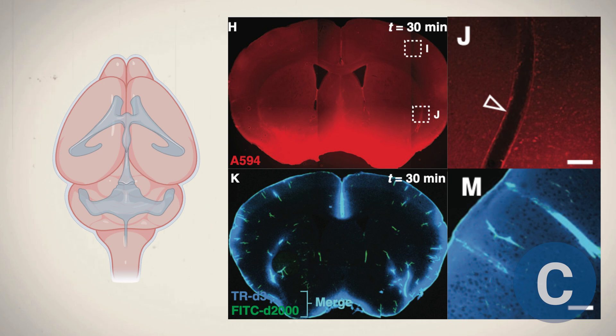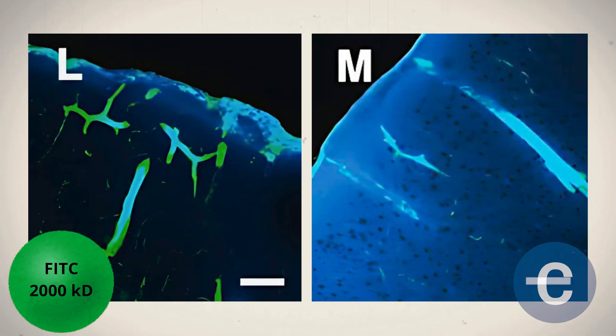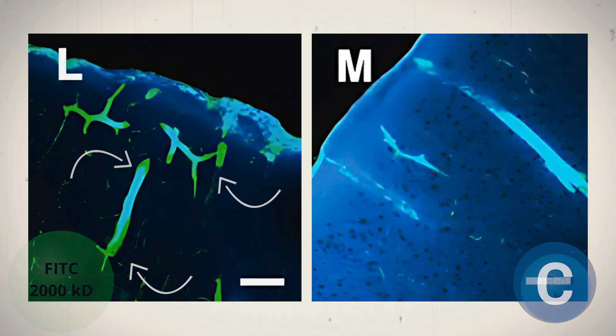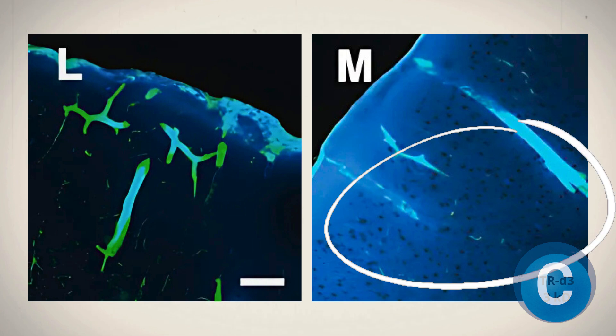The tracers spread along the brain's blood vessels, showing different patterns based on their size. Larger molecules like 50CD2000 tracer, in green, tend to stay around the spaces surrounding arteries, known as paravascular spaces, without penetrating deeply into the brain tissue. The medium-sized tracer, in blue, spreads more widely into the parenchyma, suggesting that molecule size affects the level of diffusion.